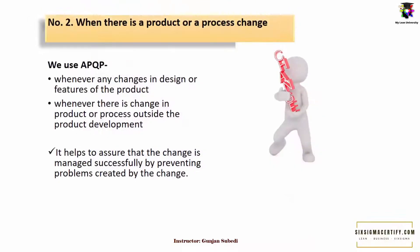Number 2: When there is a product or a process change. Whenever there are changes in design or features of the product, or whenever there is a change in the product or process outside that product development, we need to adopt APQP. It helps to assure that the change is managed successfully by preventing problems created by the change.